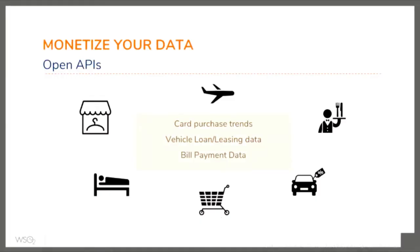Within finance, how do you generate new revenue streams? Your bank knows more about you than your spouse does — so what should it do with that information? Aggregate it and sell insights to retailers, hospitality services, and car dealerships — entities that can use purchase trends, bill payment patterns, demographics, seasonalities, and timing information to make better business decisions.